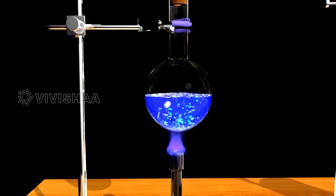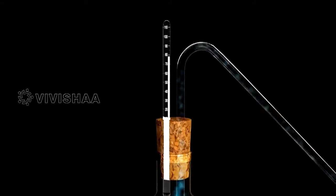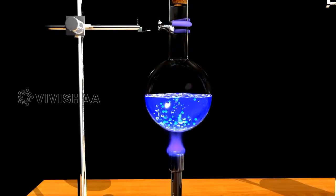As we heat the distillation flask, ethanol in the liquid mixture will begin to boil at 78.4 degrees Celsius and start to vaporize.